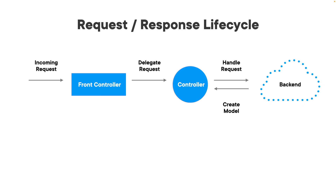Once that gets back to our controller, the controller says it's going to let somebody else do the rendering. So it packages that model up and hands it back to our front controller to do the rendering. The rendering is separate from business logic — this is our model-view-controller design pattern, where everything does its own specified functionality.